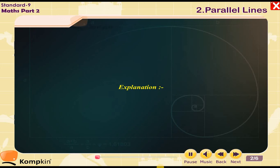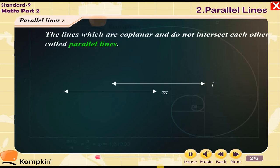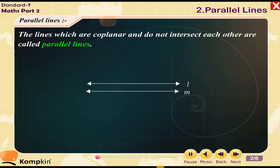Definition. Parallel lines. The lines which are coplanar and do not intersect each other are called parallel lines. Line L, Line M.